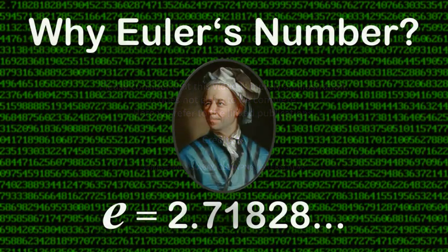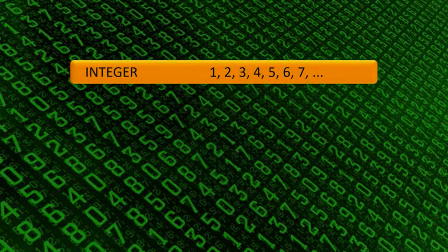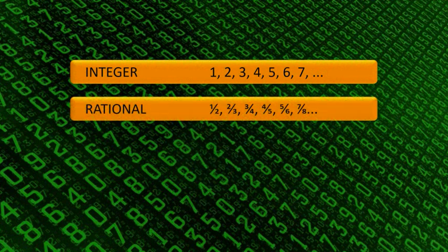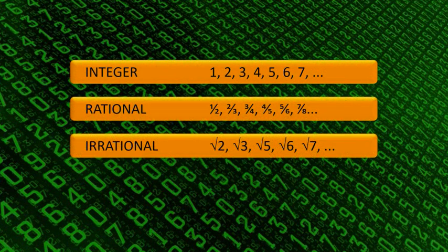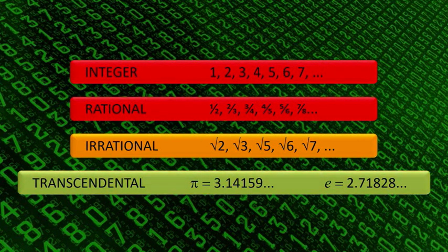In this video I invite you to learn why Euler's number is so important in the universe. You will learn that the difference between integer numbers, rational, irrational, algebraic and transcendental numbers is not only a mathematical task, but also an essential aspect of stability in real systems.